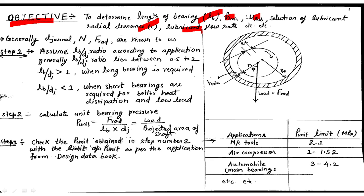On the right side of the screen you will see the figure of a hydrodynamic journal bearing. Here r is the radius of the journal and rb is the radius of the bearing. The radial load f_radial is acting vertically downward, and h_min is the value of minimum fluid film thickness.